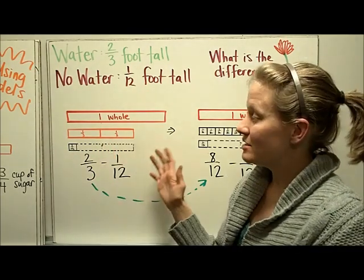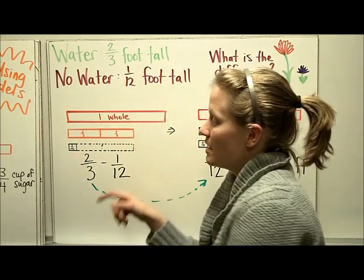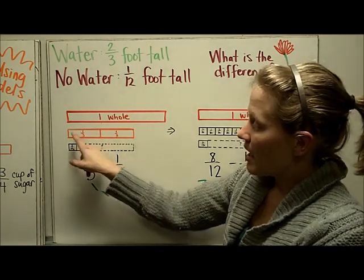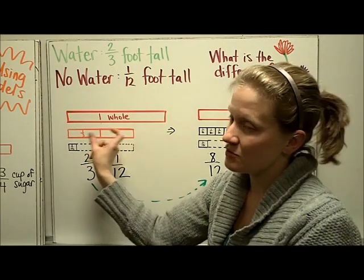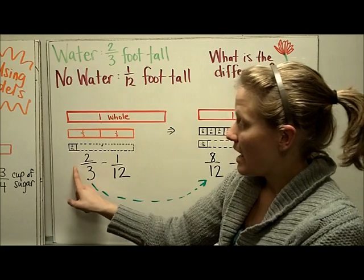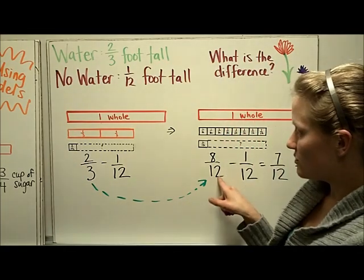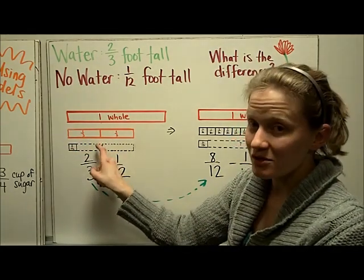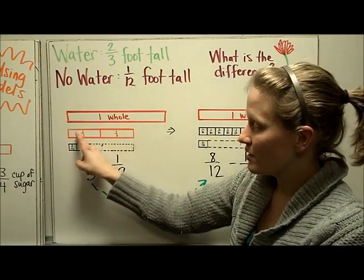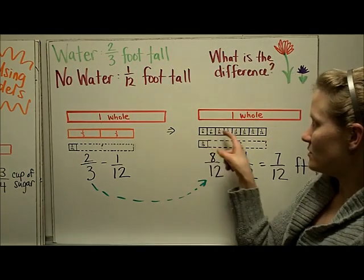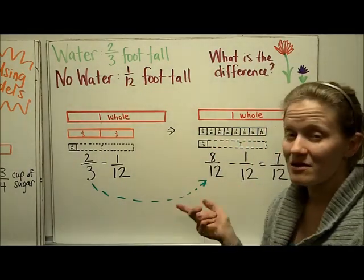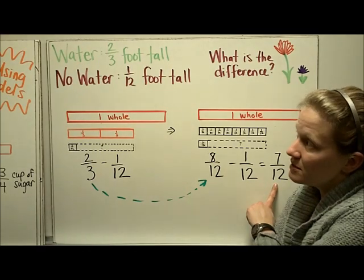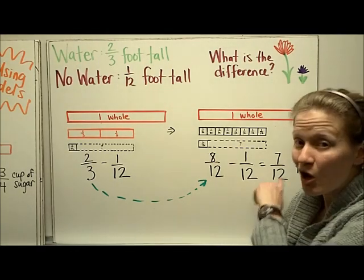I can't subtract them until the denominators are the same. So I'm going to make a swap — could I swap so that they're all twelfths? One-third is equal to four-twelfths, and two-thirds is equal to eight-twelfths, because four-twelfths plus four-twelfths gives you eight-twelfths, shown here. Now that we have the same denominators, we can subtract: eight-twelfths minus one-twelfth. The difference is seven-twelfths of a foot. So the plant with water was seven-twelfths of a foot taller than the plant without water.